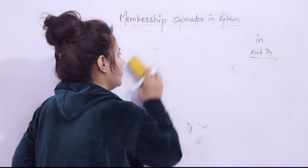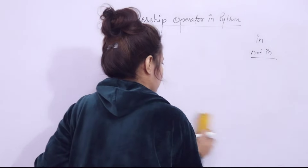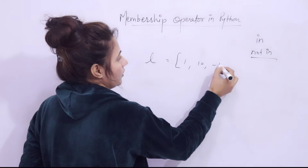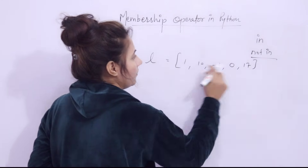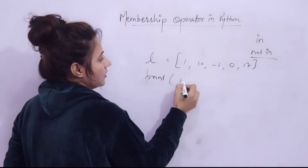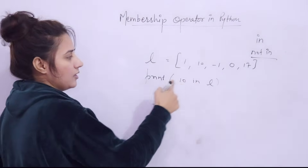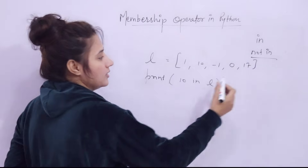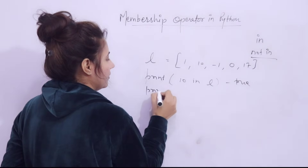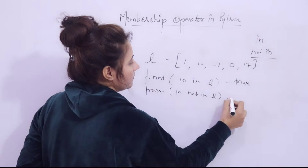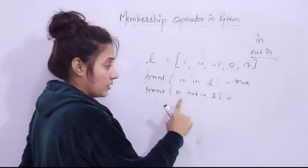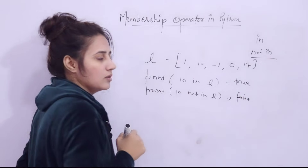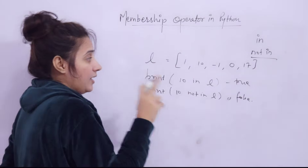Let's also take an example with a list. Suppose list l = [1, 10, -1, 0, 17]. If I check print(10 in l), since 10 is present in the list, it returns True. If I check print(10 not in l), since 10 is present, it returns False. These membership operators work the same way across different sequence types.